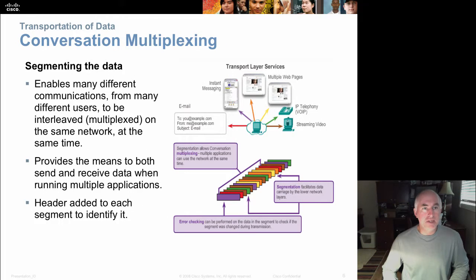When we segment the data, the benefit of segmentation is shown here in this illustration. If you look at the colored squares, each color represents a different conversation, all being put on the same link. This allows us to better share a pathway, a roadway, the media. The media is our copper wires, our fiber optic, our wireless.